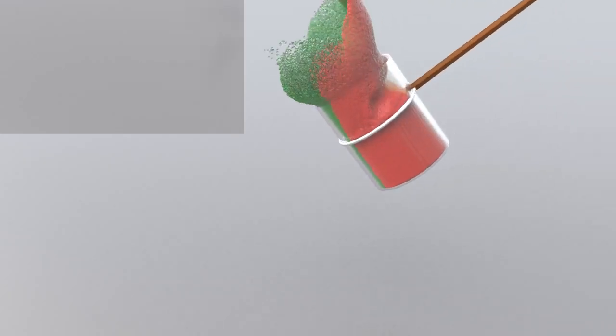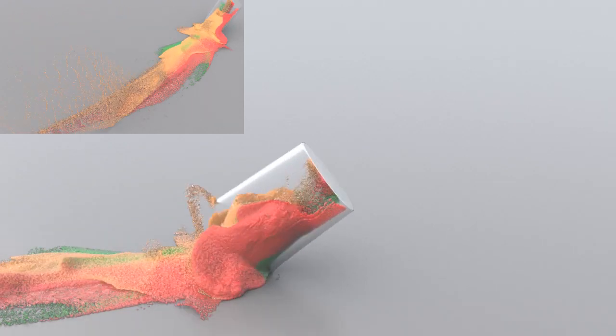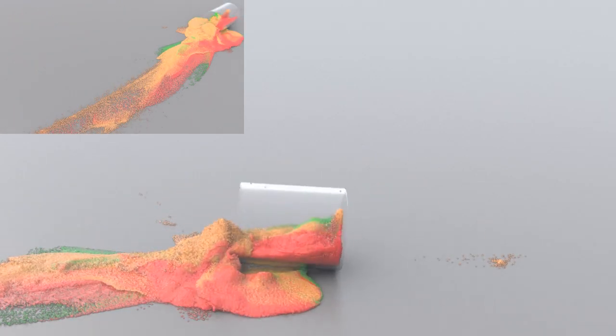Here we demonstrate natural coupling with traditional MPM materials. The cup is simulated as a shell. It is filled up with slushy granular material and is then toppled.